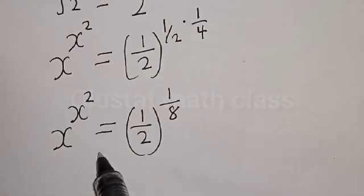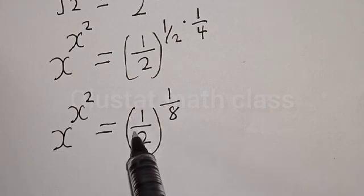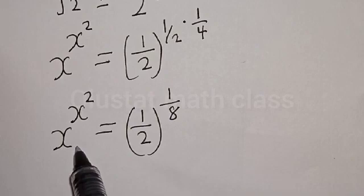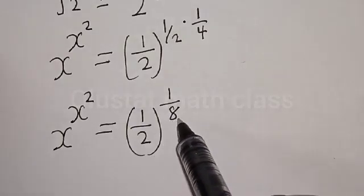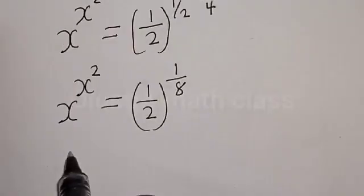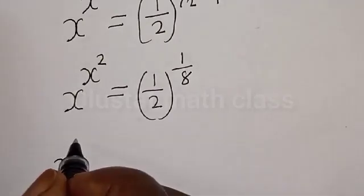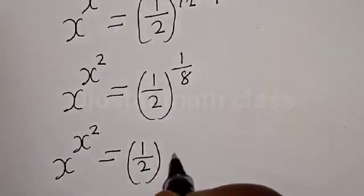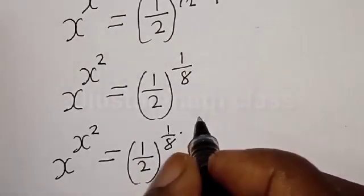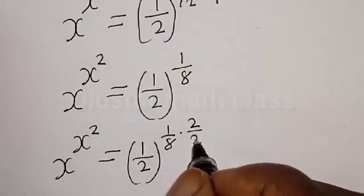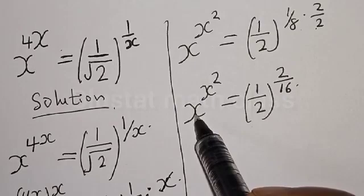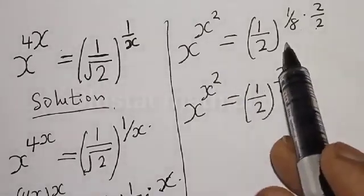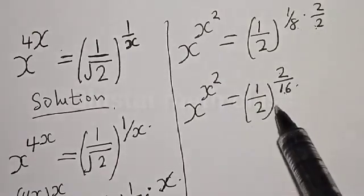At this point, we are going to perform a trick: if you multiply 1 by any number, you get that number back. So the right-hand side is going to be multiplied by 2 divided by 2, because 2 divided by 2 is 1. We have x raised to the power x squared equal to 1 divided by 2 raised to the power of 1 divided by 8, multiplied by 2 divided by 2. Then from here, we have x raised to the power x squared equal to one half raised to the power of 1 times 2, that is 2, and 8 times 2, that is 16.